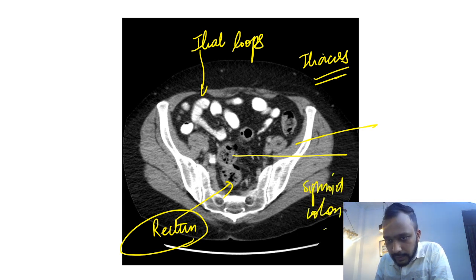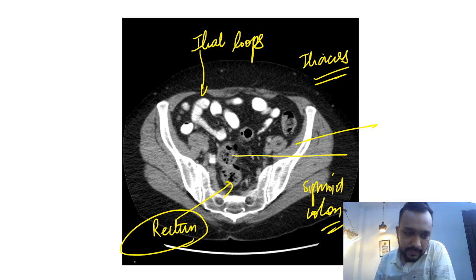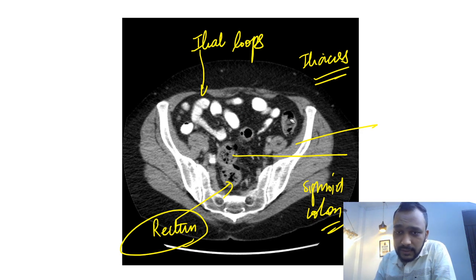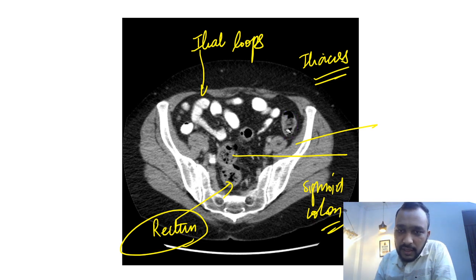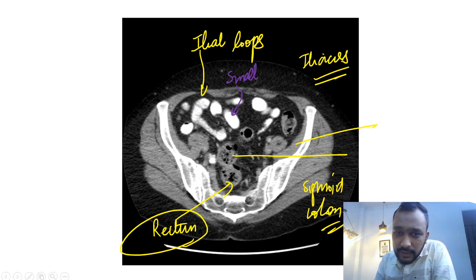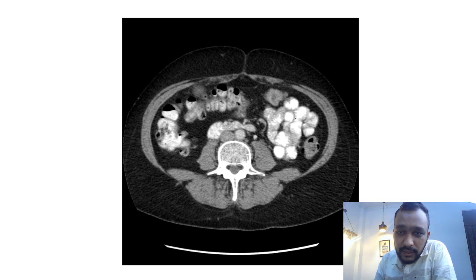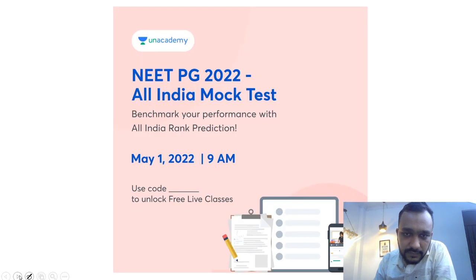Just remember: in the sigmoid colon and rectum, air is present. In large bowel loops, air is mixed with the contents. But if you look at the small bowel loops, they have liquid contents, and even if air is visible, it will not be mixed with the contents.